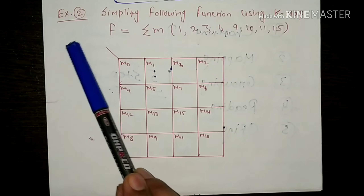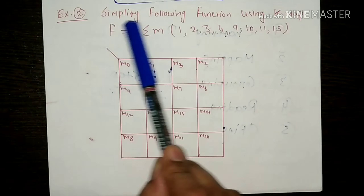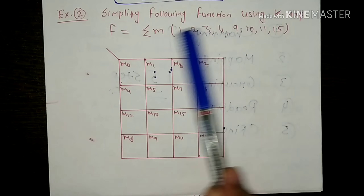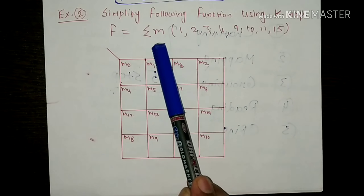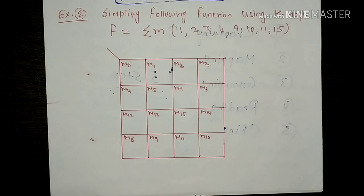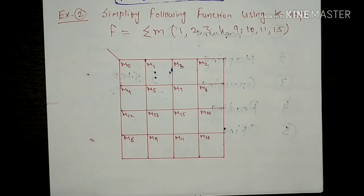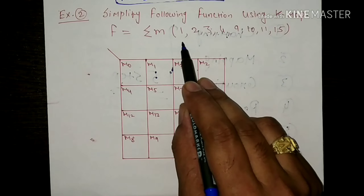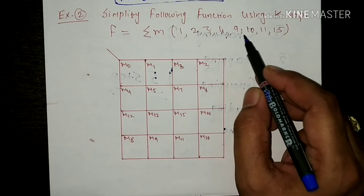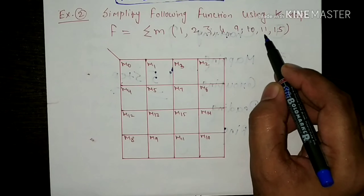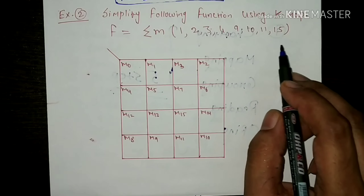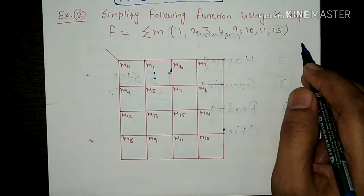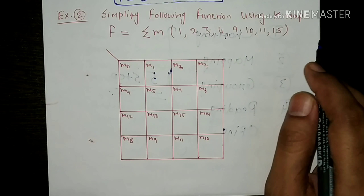So let us take one example in which we simplify the following function using KMAP. The function is given in which the minterms are 1, 2, 3, 4, 9, 10, 11, and 15. So these minterms are given and I have to simplify it with the help of KMAP method.